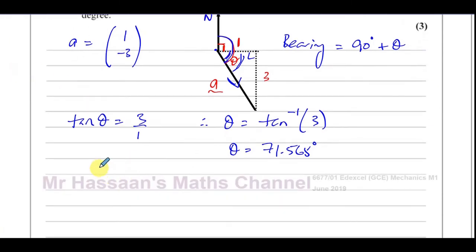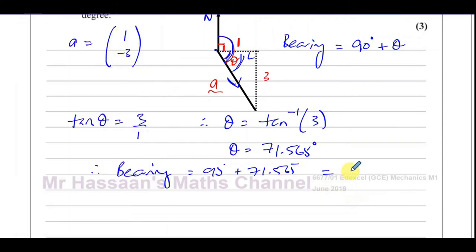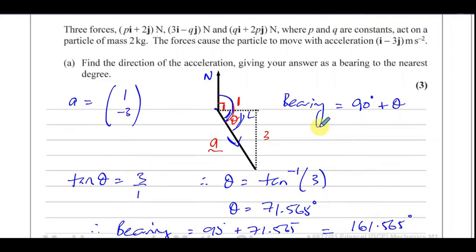Therefore we can say that the bearing is 90 plus 71.565. So we take the answer that we got in the calculator and we add 90 to it, which gives us 161.565. Bearings should always be given to the nearest whole number, so therefore it's equal to 162 degrees.